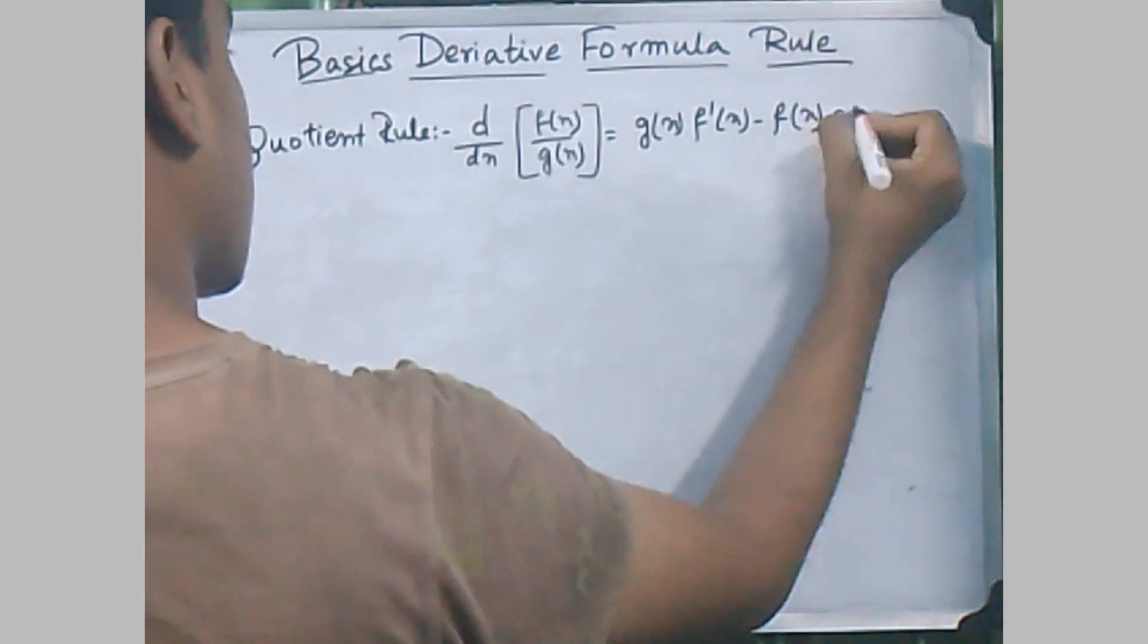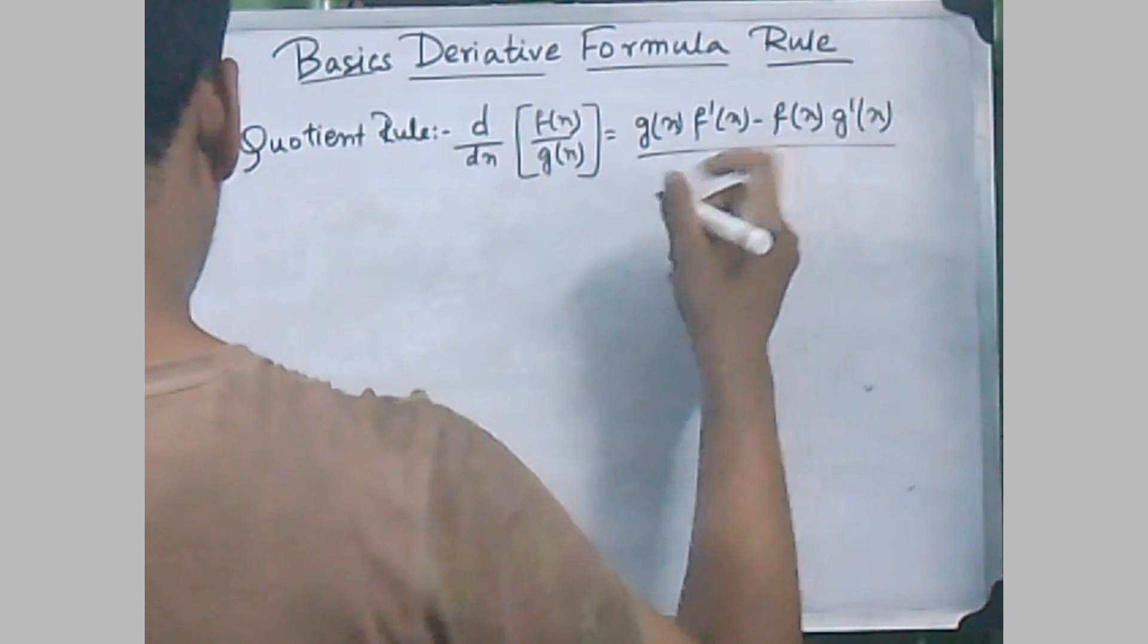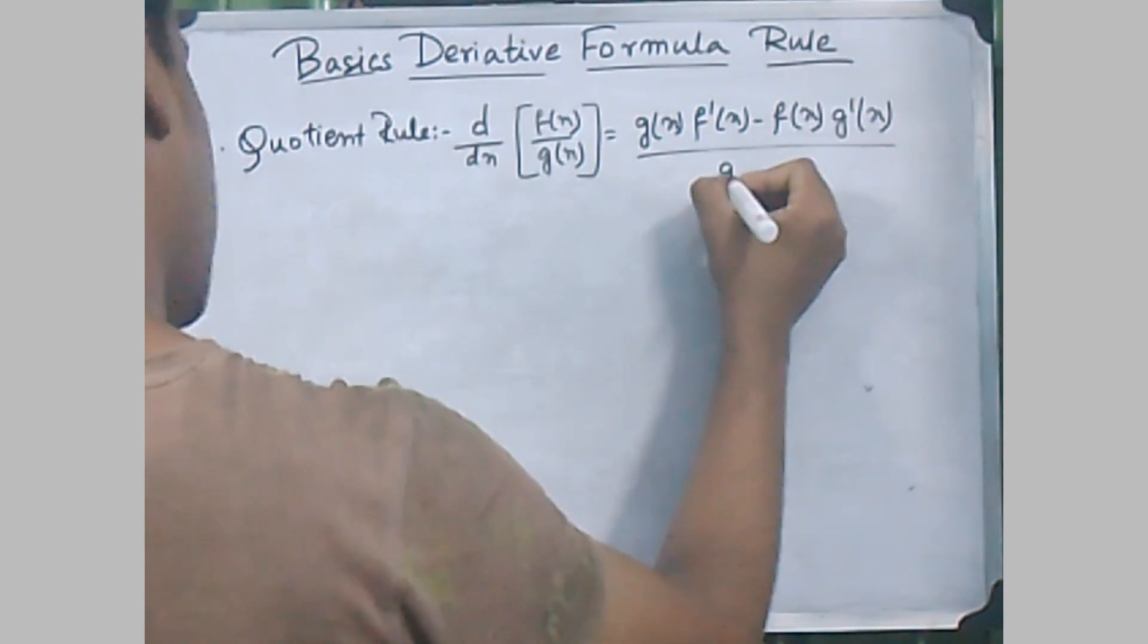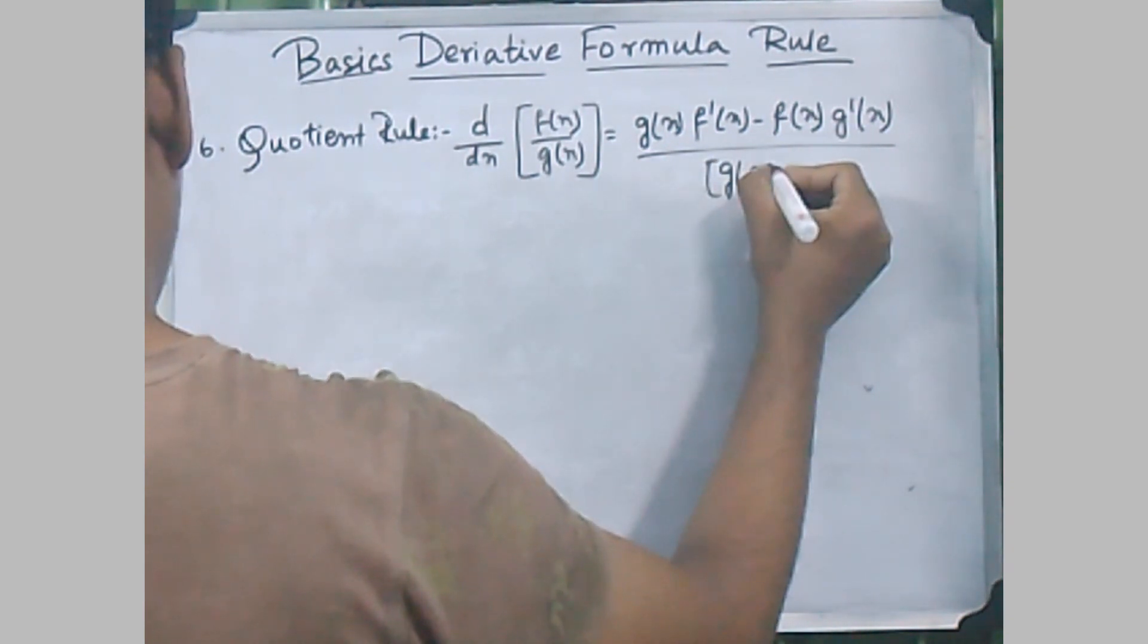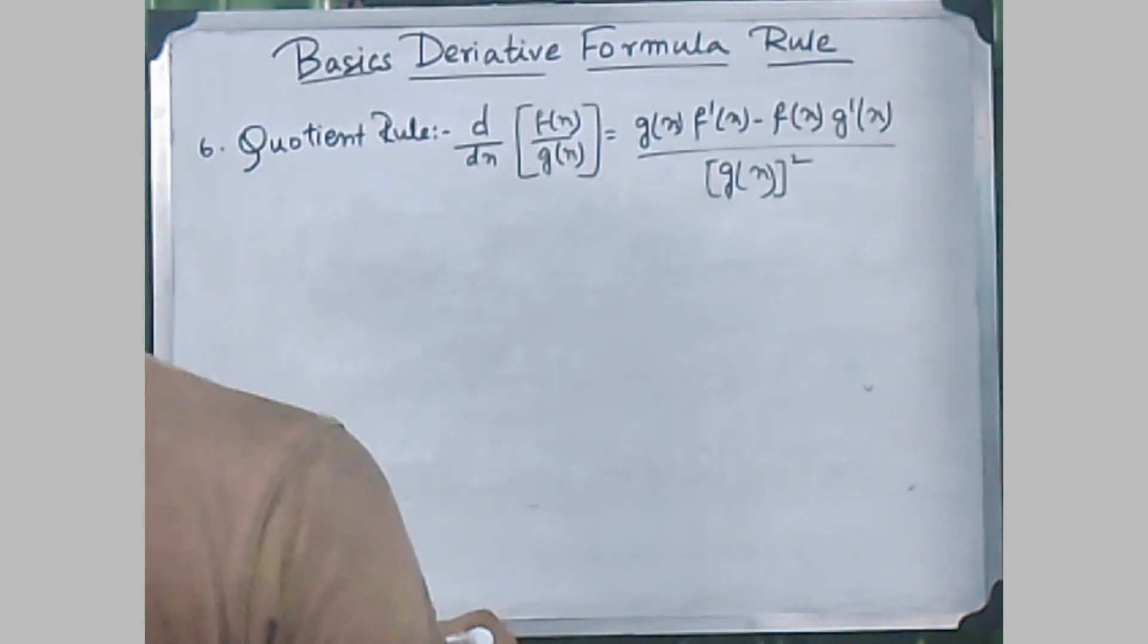minus f(x)·g'(x)] divided by [g(x)]², where g(x) is whole squared.